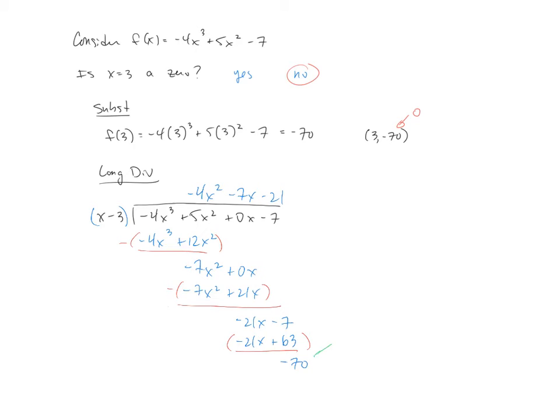That negative 70 is of course the remainder, and it's no coincidence that the remainder of negative 70 is also the y-coordinate or the output by the substitution method. This is called the remainder theorem. Notice though what happened: not only were you able to answer the yes or no question by looking at the remainder, you also got a little more information. You also ended up with a quotient, and here in a little bit that quotient is going to be pretty important.